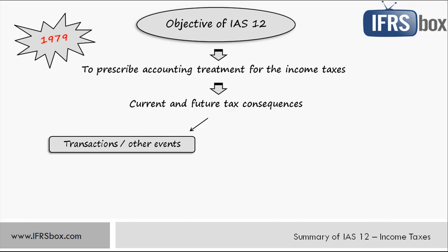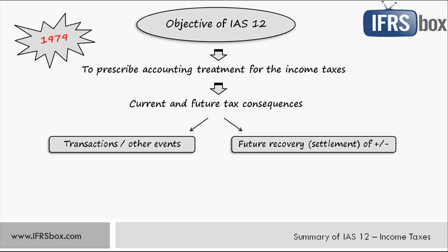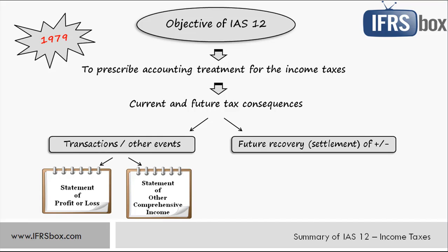This includes future recovery of carrying amount of assets or settlement of liabilities in the entity's statement of financial position. With regard to tax consequences of various transactions and events, IAS 12 makes it easy because you just need to account for taxes in the same way as for the transaction itself. So if you recognize a certain item to profit or loss, then its tax consequence — which is current or deferred income tax — is recognized to profit or loss too. The same applies for the statement of other comprehensive income: if the transaction goes to OCI, then its tax consequence goes to OCI too.